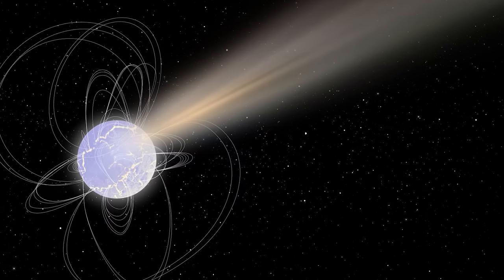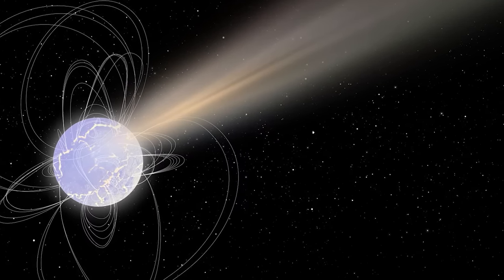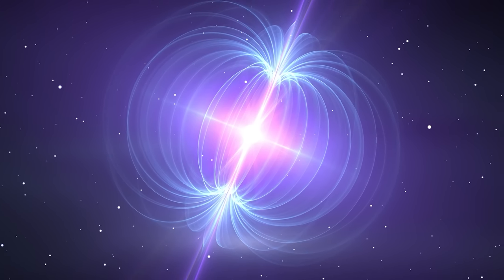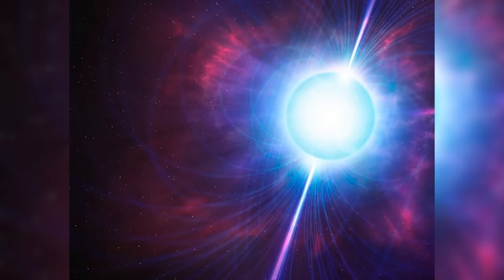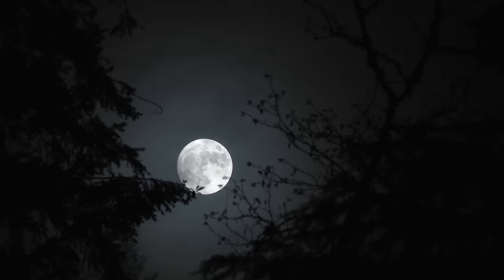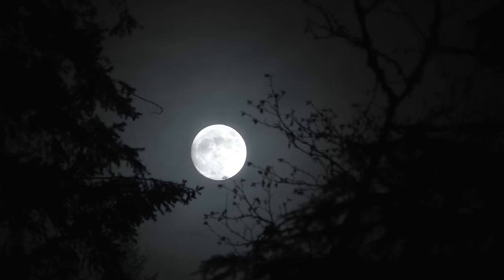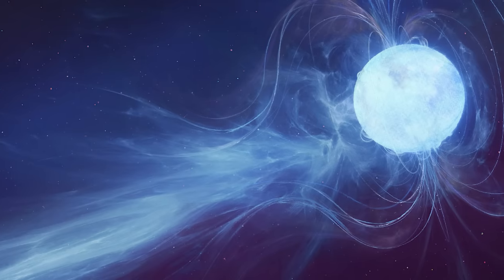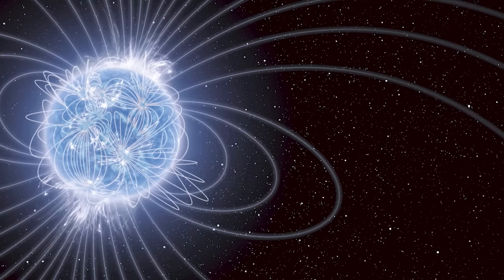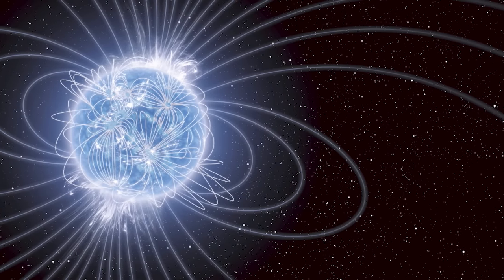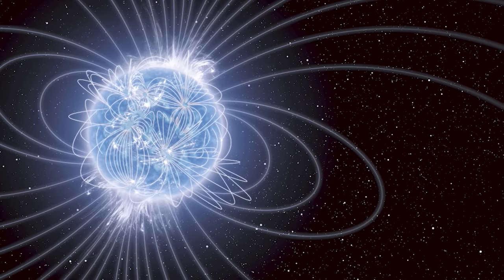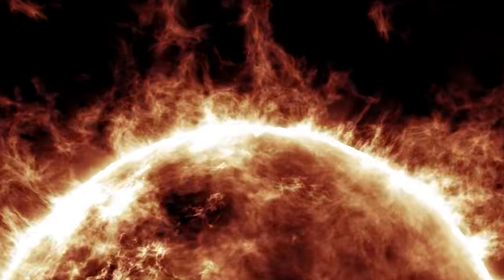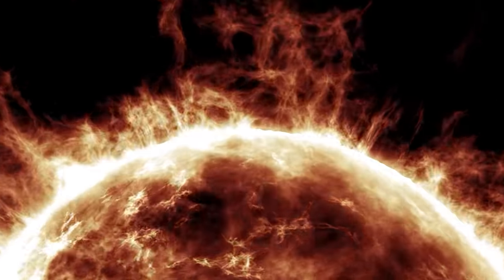But what truly sets magnetars apart from other neutron stars is their magnetic field. These fields are up to a thousand times stronger than typical neutron stars. To understand this kind of magnetic might, consider this: If a magnetar were located about halfway to the Moon, it could strip the information from all the credit cards on Earth. Magnetars are also dynamic and occasionally unpredictable. They can produce what's known as starquakes due to the tension between their immense gravity and their magnetic fields. These starquakes can release gamma-ray flares.